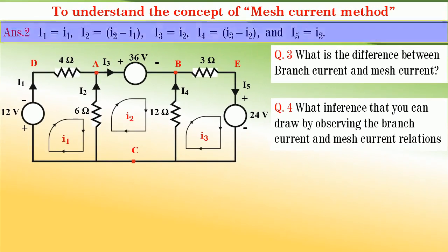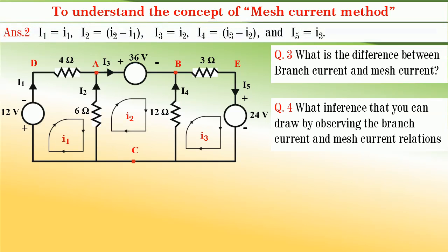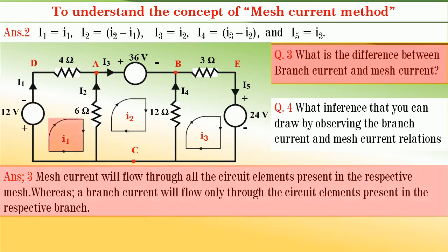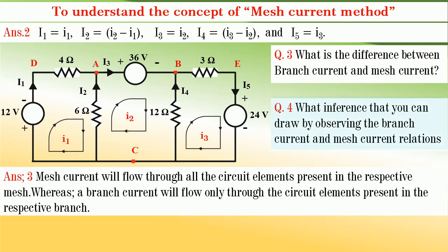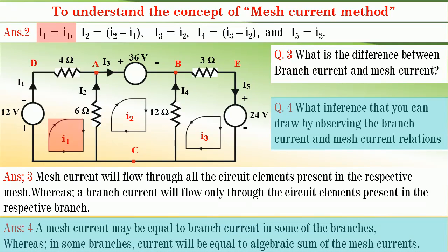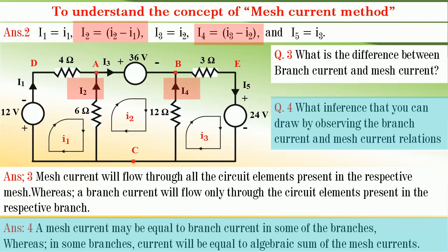The relations between branch currents and mesh currents are indicated here for convenience. My first question is: what is the difference between branch current and mesh current? A mesh current flows through all the circuit elements present in the respective mesh, whereas a branch current flows only through the circuit elements present in the respective branch. My next question is: what inference can you draw from the branch current and mesh current relations? A mesh current may equal the branch current in some branches, whereas in other branches the branch current equals the algebraic sum of the mesh currents.